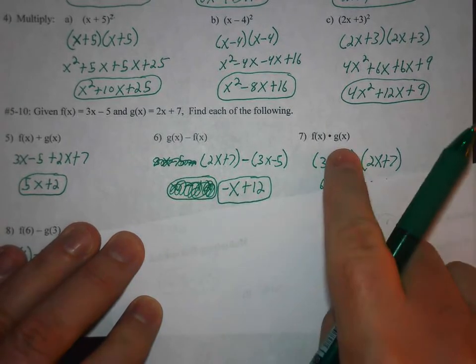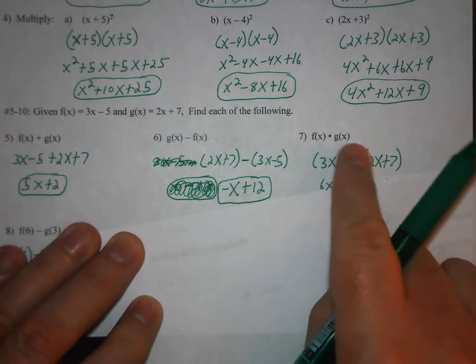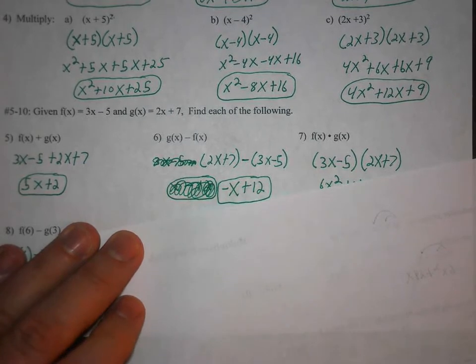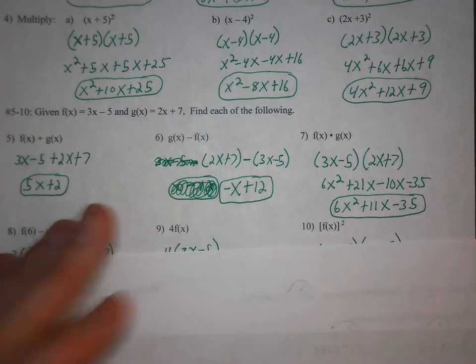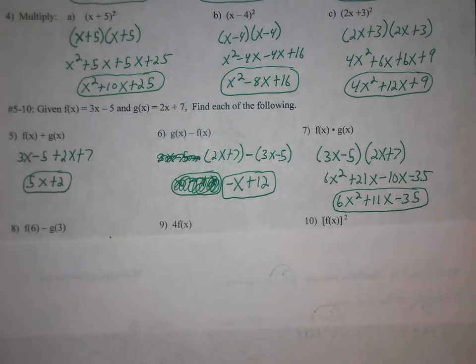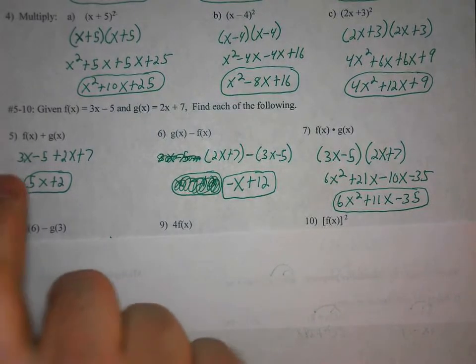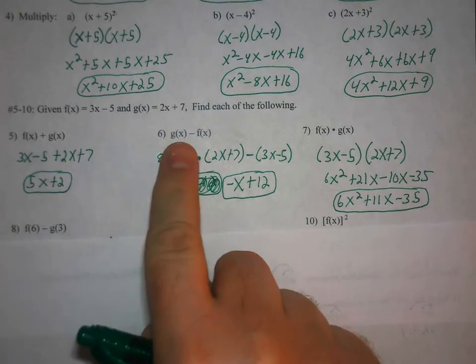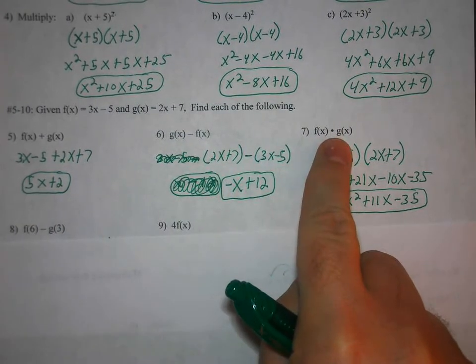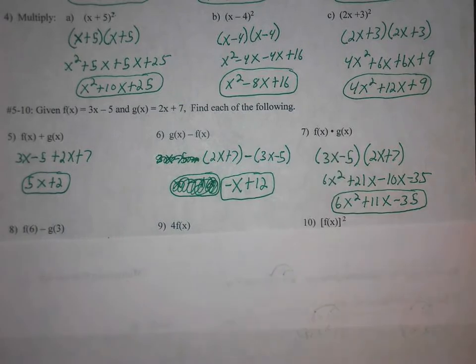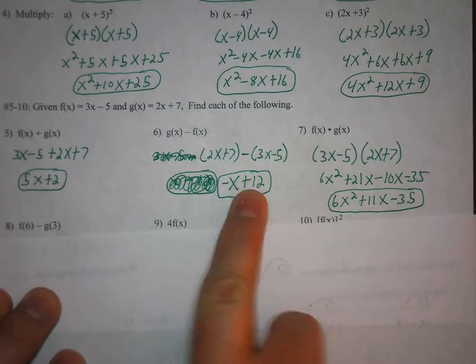And then we have f of x times g of x. So that's multiplying the two polynomials. And again, if you want to pause the video, go ahead. And notice that in each of those, notice that we get x in the parentheses. And this is actually a very big point to make here. When you have the x in parentheses, it means that we don't have a number to substitute in for x. So you're going to get x's in your answers.